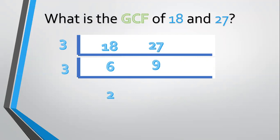Now 2 and 3 have no more common factor — we can't divide them further, so we stop. Then we multiply the common factors: 3 times 3 equals 9. Therefore, the greatest common factor of 18 and 27 is 9.